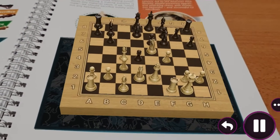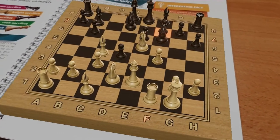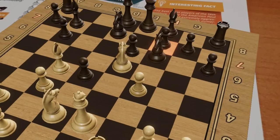Sacrifice. The weak f7 square is a frequent target for piece sacrifices, often already in the opening.